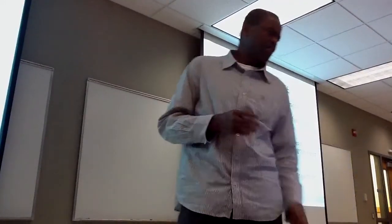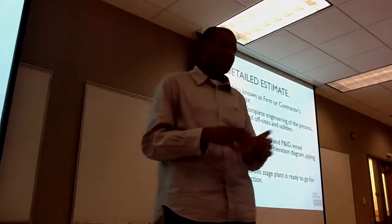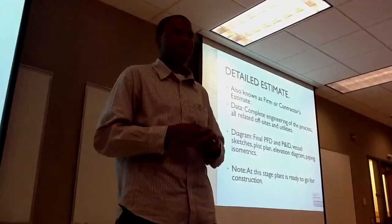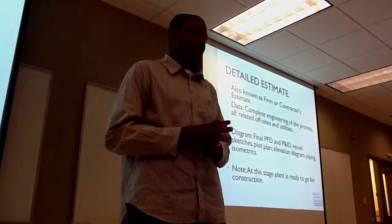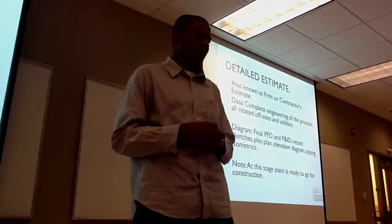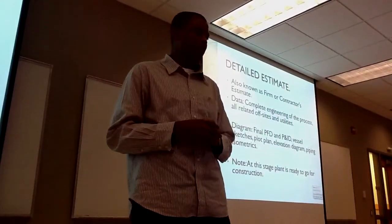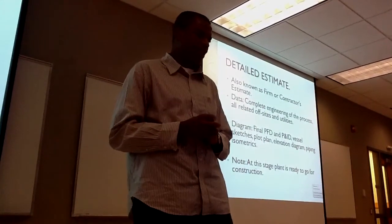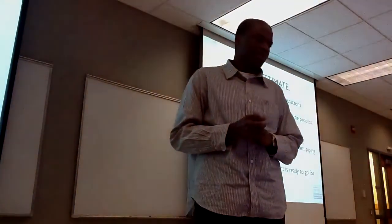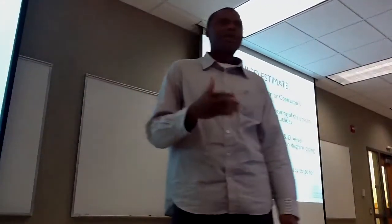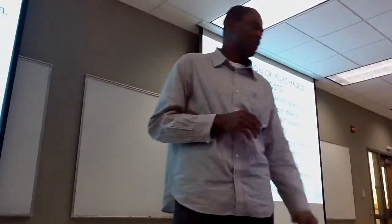The detailed estimate is also known as the firm or contractor's estimate. This is the final and most complete estimate needed to proceed with building the plant. The data required is complete engineering of the process and all related off-site and utilities. The diagrams required are the final process flow diagram, the P&ID, vessel sketches, plant layout, elevation diagrams, and piping isometrics. At this stage, construction of the plant will be initiated.